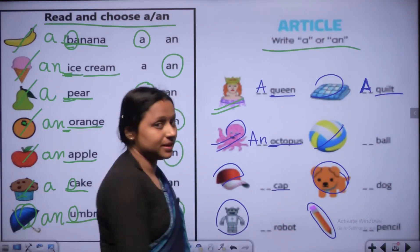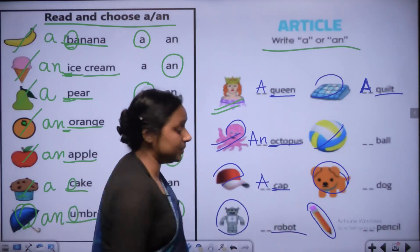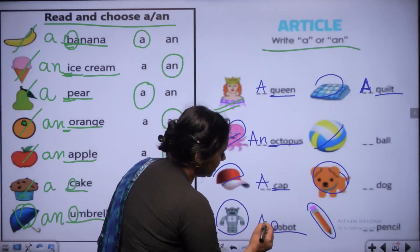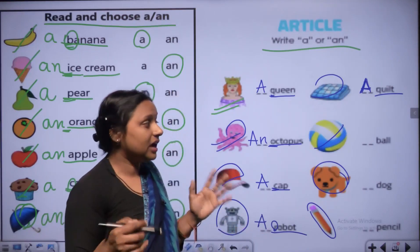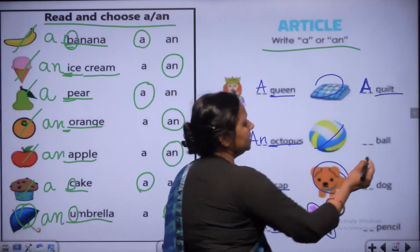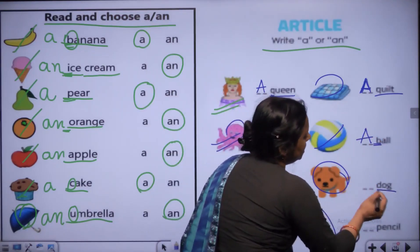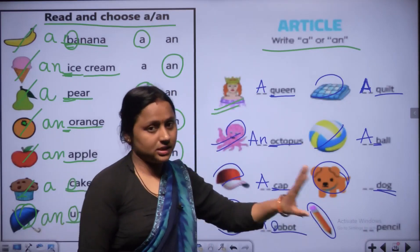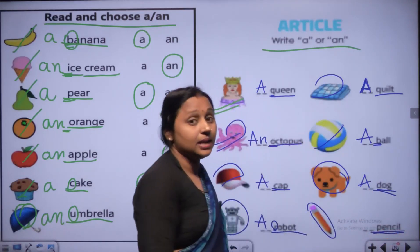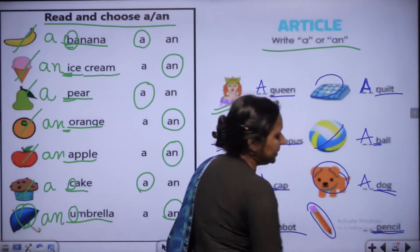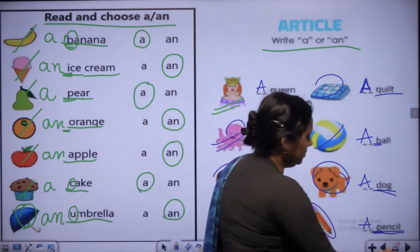Cap - C, A, P. C is consonant, so we use A - a cap. Robot - R, O, B, O, T. R is consonant, so we use A - a robot. Ball - B, A, double L. First letter B is consonant, so we use A - a ball. Dog - D, O, G. D is consonant, so we use A - a dog. Pencil - P, E, N, C, I, L. P is consonant, so we use A - a pencil.